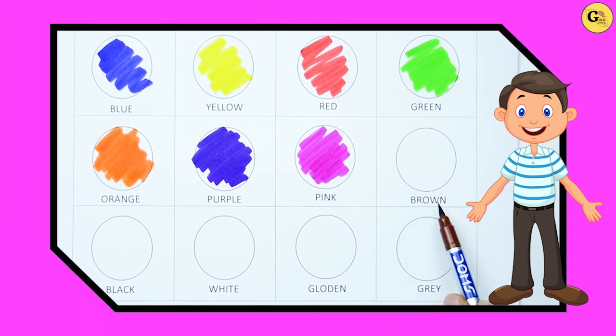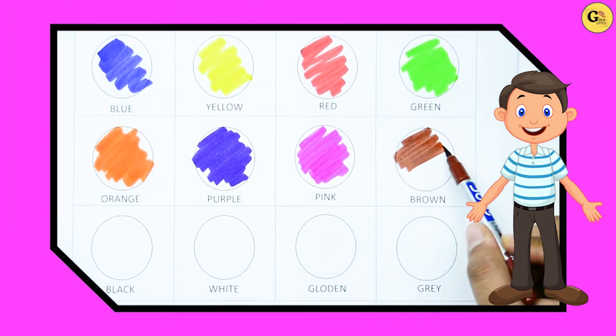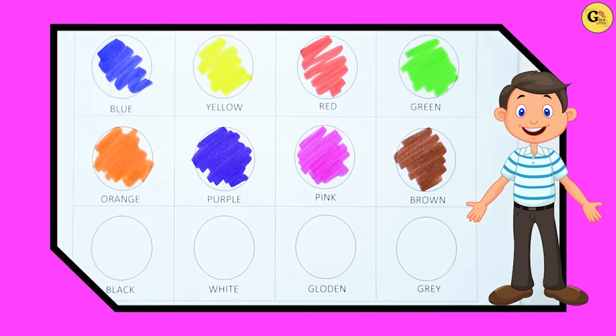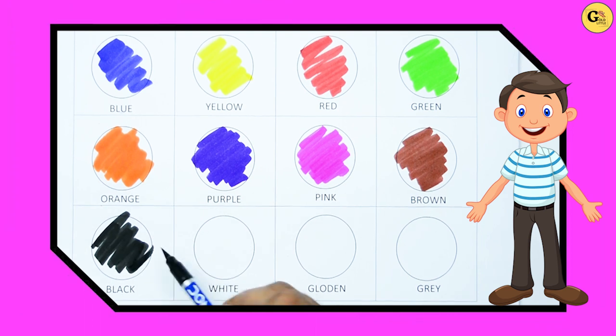Now we want which color? B-R-O-W-N. It's brown, brown color. It's brown color. Now we want, yes tell me, black. B-L-A-C-K. It's black, black color. It's black color. We want white color, so kids it's white color.